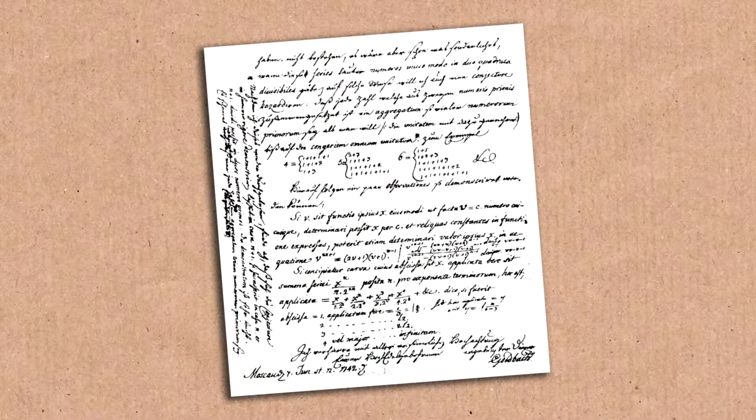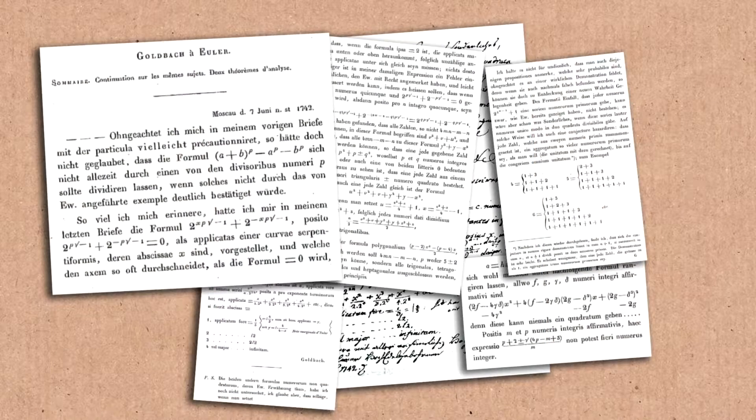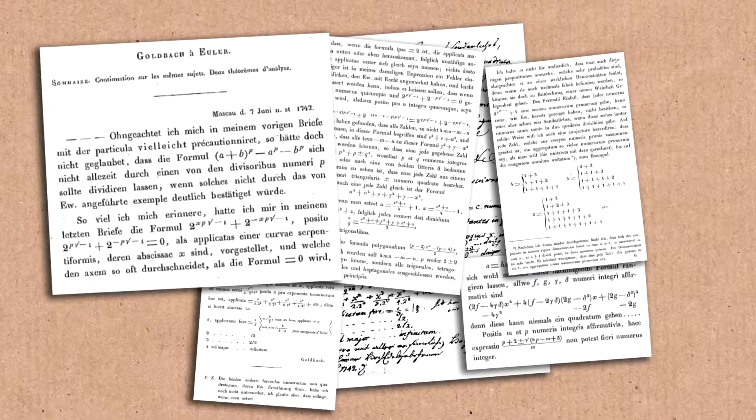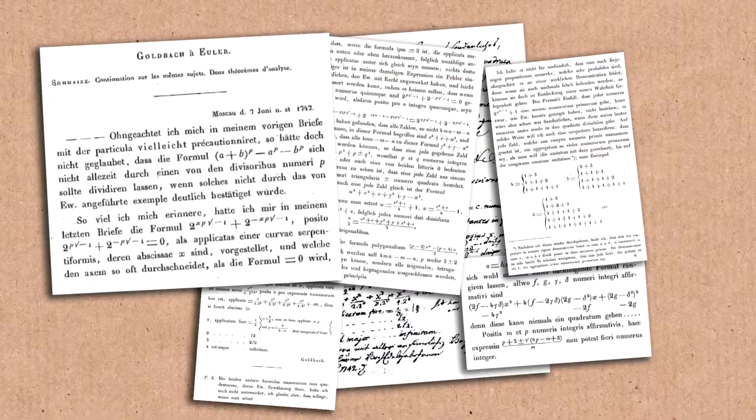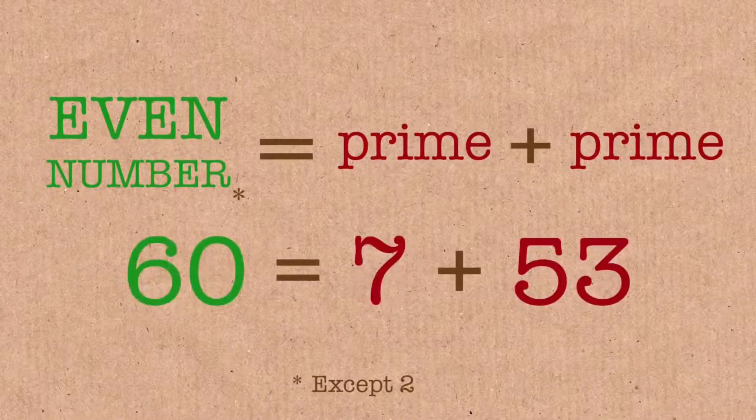In a letter that he wrote to Euler on the 7th of June in 1742, Goldbach proposed this conjecture, which got sort of ironed out after a few rounds, but it is the famous conjecture now, which says that every even integer is the sum of two prime numbers.